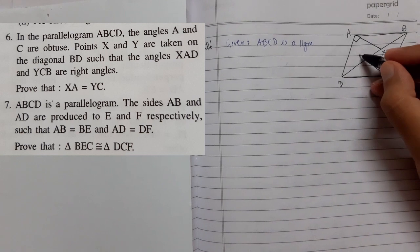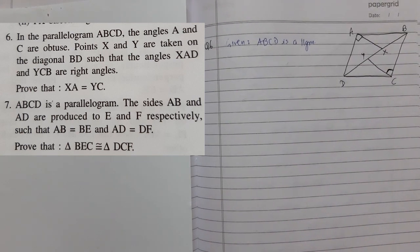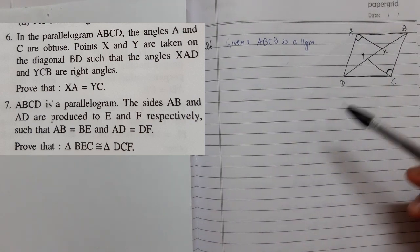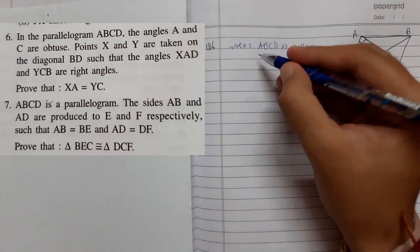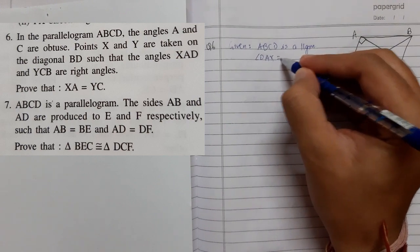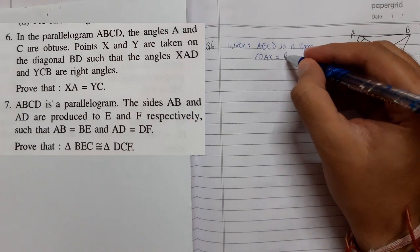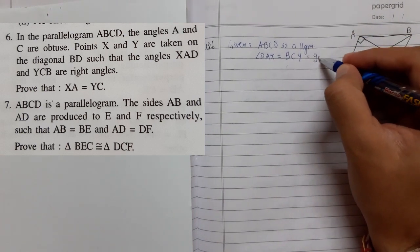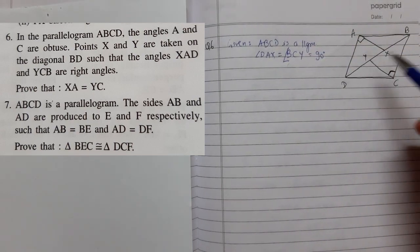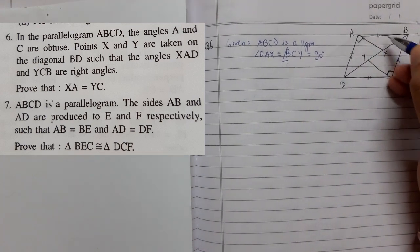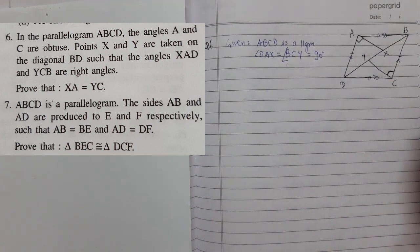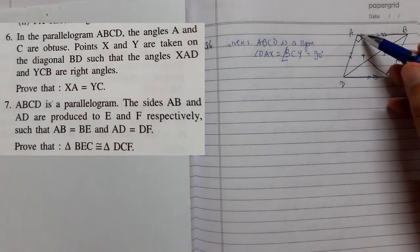We now have the figure — this is a very important question because they haven't given us the figure; we have to draw it ourselves. Let's write the given part: angle DAX equals angle BCY equals 90 degrees. Since it is a parallelogram, opposite sides are equal and parallel. We need to prove that XA equals YC.